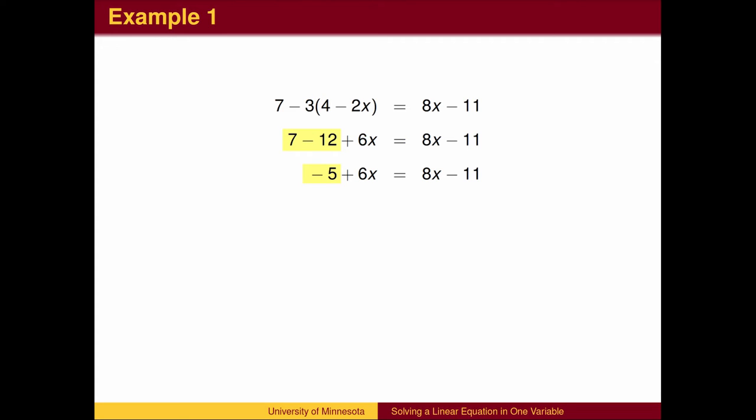Next, on each side of the equation, combine like terms. In general, you may need to combine like terms in several places, but in this case, we only need to add the 7 and negative 12.